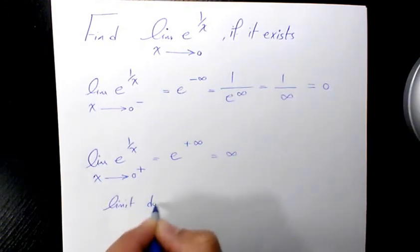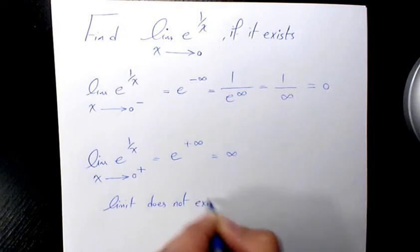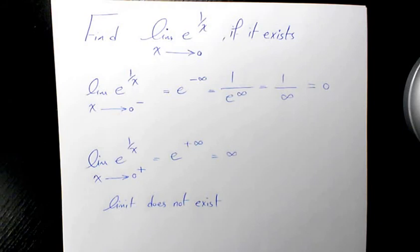limit does not exist because they are not equal to each other. So that's how we find out the limit of e^(1/x) when x approaches 0. I hope you enjoyed this video.